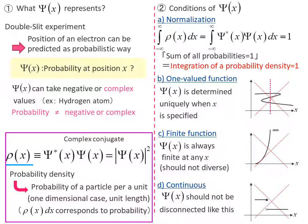The first important condition is normalization. Note that the sum of the probabilities should always be one in general. Hence, if ρ(x)dx means the probability at position x, the sum of all the probabilities for all x should be one.